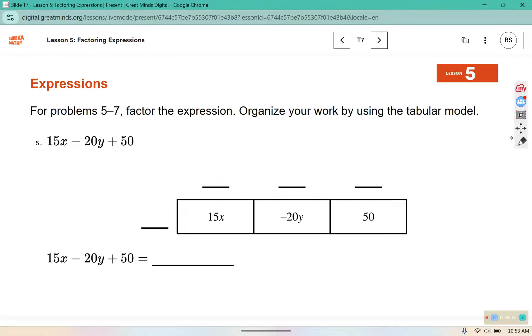So, in this one, 15, 20, and 50 all have 5 in common. So as soon as I put 5 here, to get 15x, I need 3x. 5 times negative 4 gives me negative 20, but we also need that y. So it must show up in the other factor. 5 times 10 is 50. So we can rewrite this as 5 sets of 3x minus 4y plus 10.